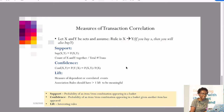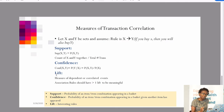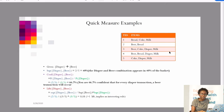Confidence is the probability of Y given X — if we already have X in our trolley, what's the probability we'll also pick Y? It's the probability of X and Y divided by the probability of X. Lift is a combination of both support and confidence; it helps us see which rules are meaningful and interesting. Most times when we have a lift greater than one, we consider it a very interesting rule.